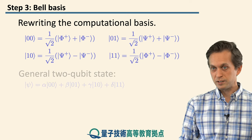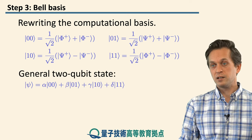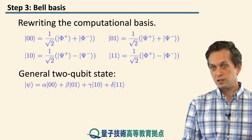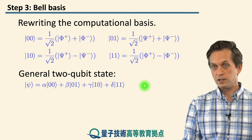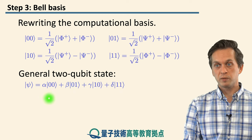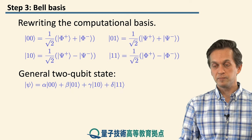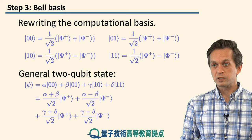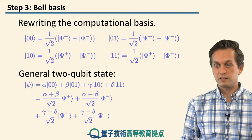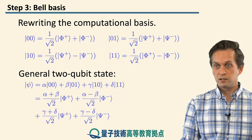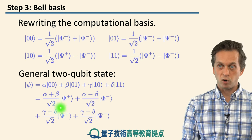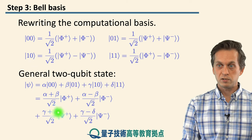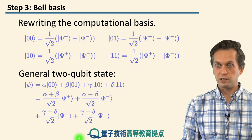This means we can take any ket — any pure state of two qubits given with arbitrary probability amplitudes alpha, beta, gamma, delta — and rewrite it in terms of the Bell states. Of course, the probability amplitudes have to transform accordingly.